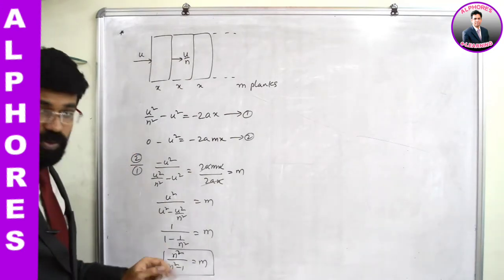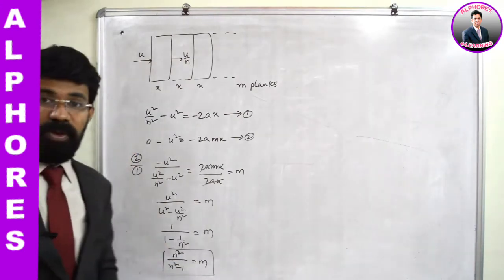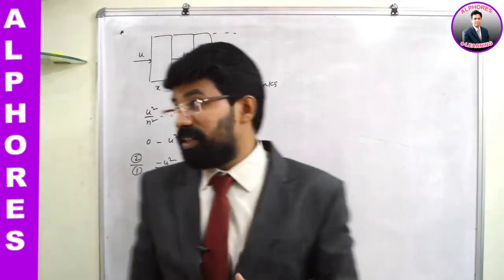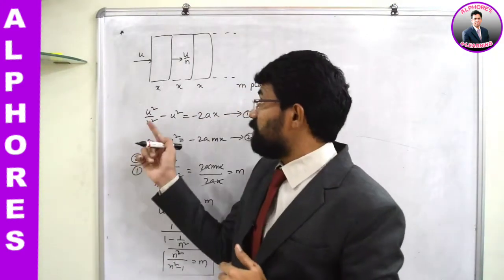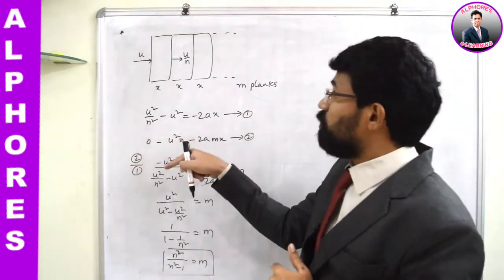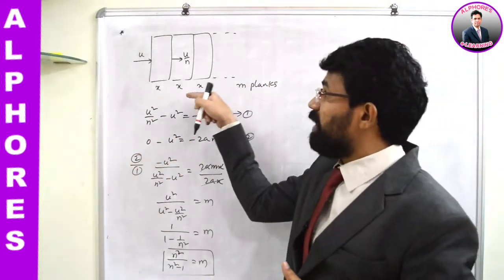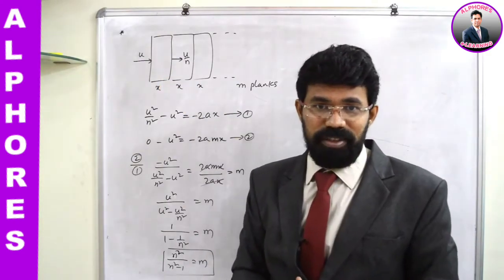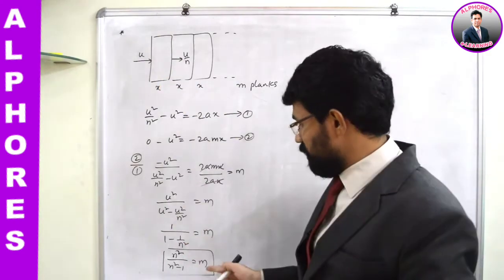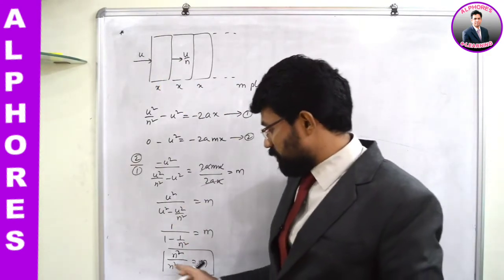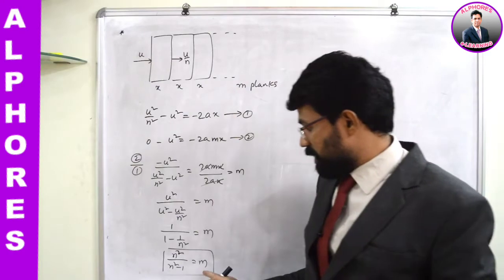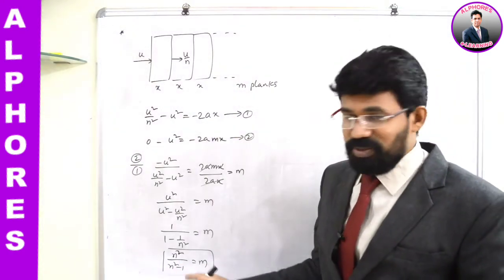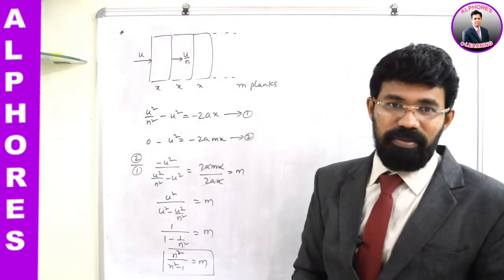This represents the number of planks required to stop the bullet when the velocity reduces to 1/nth after penetrating through one plank. The number of planks required is m = n² / (n² - 1).